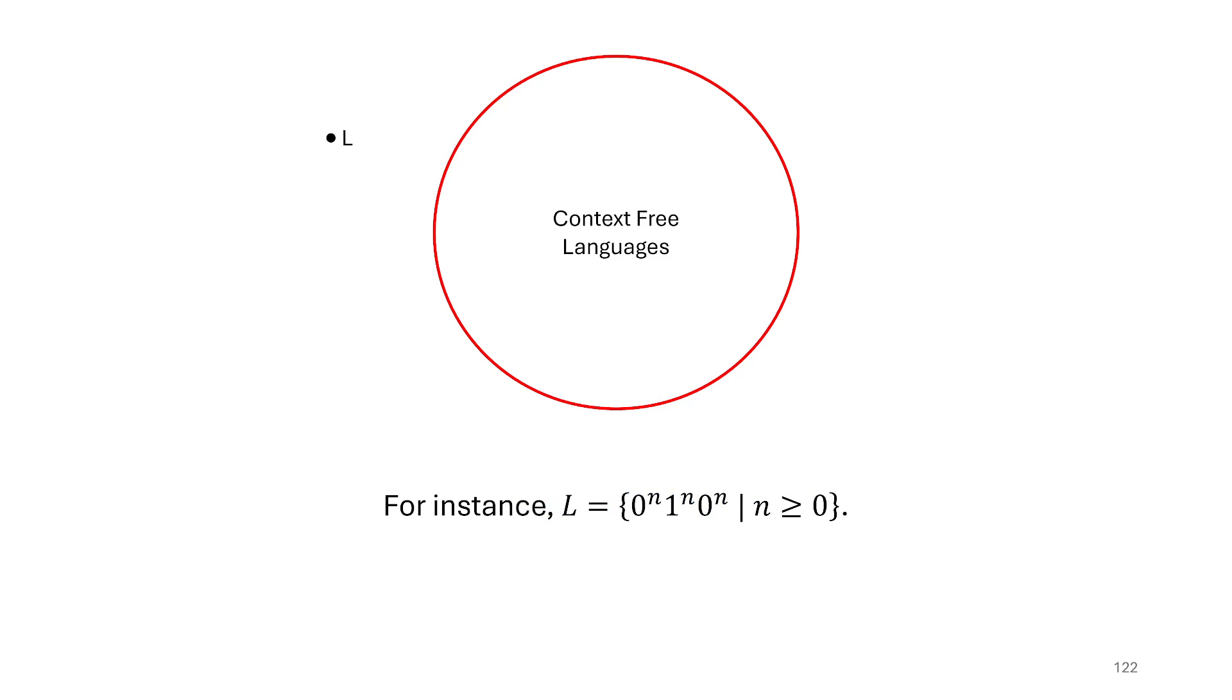In particular, here's going to be our first example, the language L equal to 0 to the n, 1 to the n, 0 to the n. Now remember, the language 0 to the n, 1 to the n was not regular, but was context-free, and we spent some time showing context-free grammar for it and a pushdown automata for it. But when we add another block, a third block on, we end up getting something that's no longer context-free, as long as we're trying to keep all three blocks as equal as we see in this language.